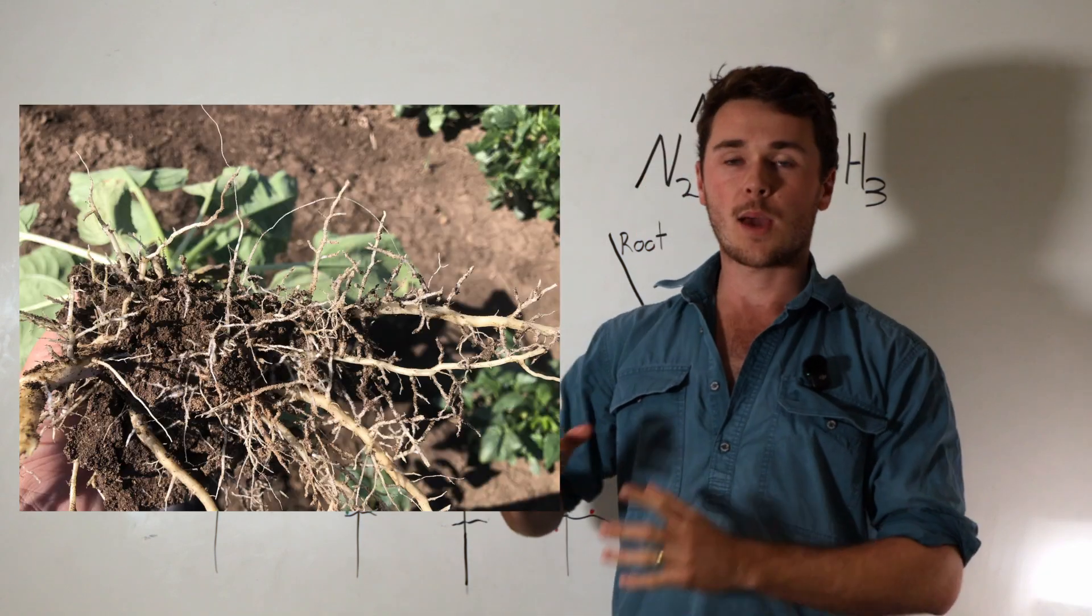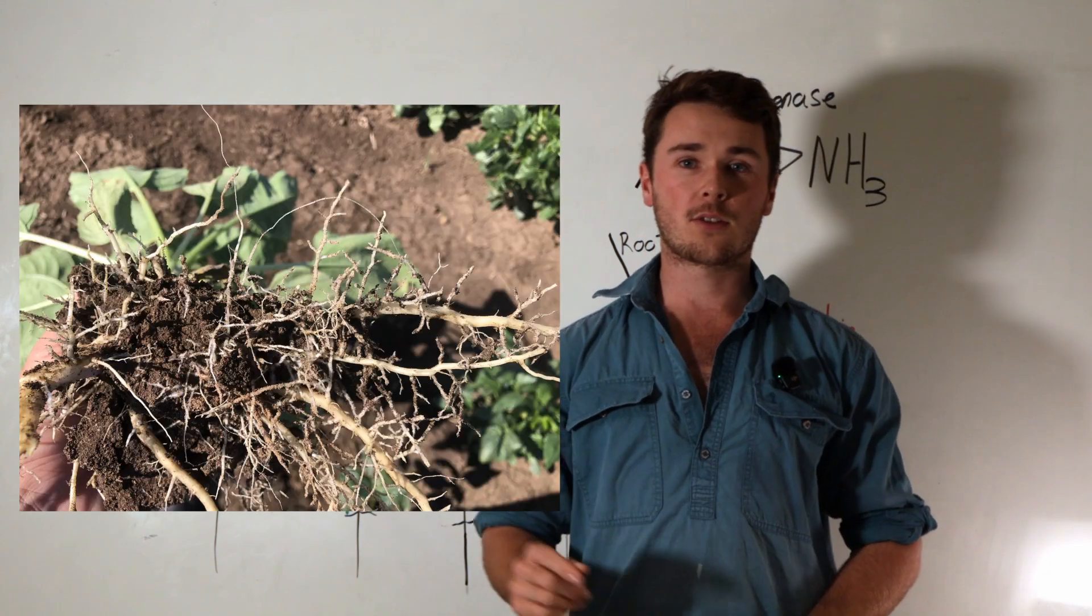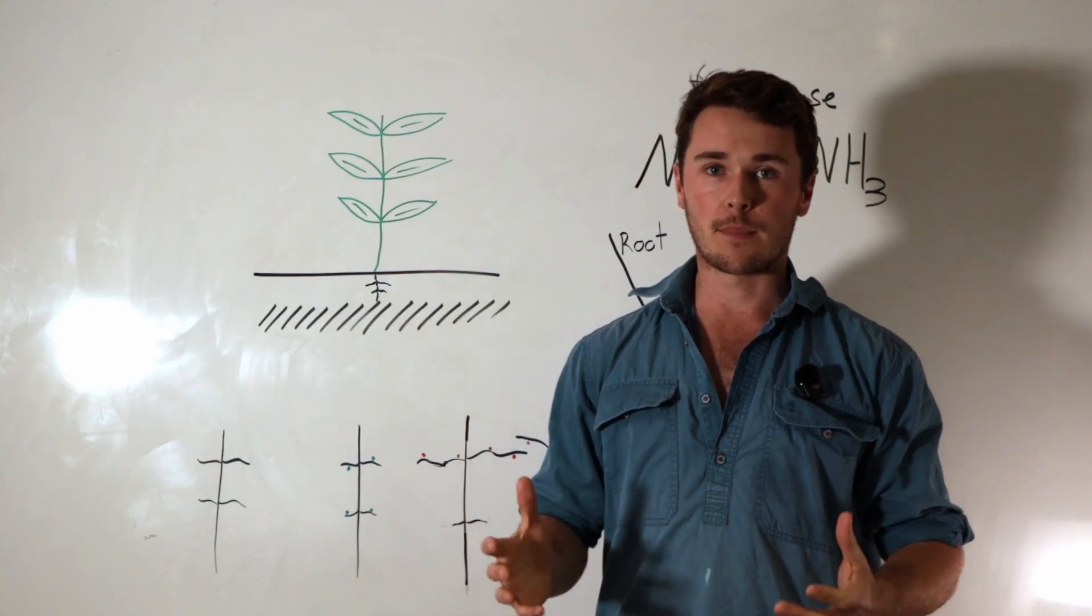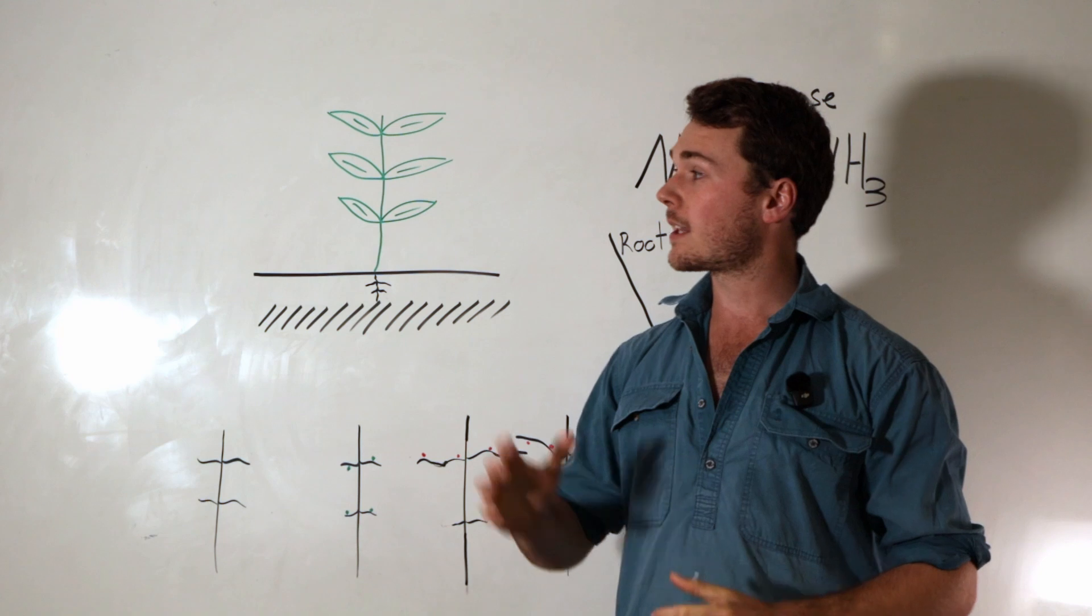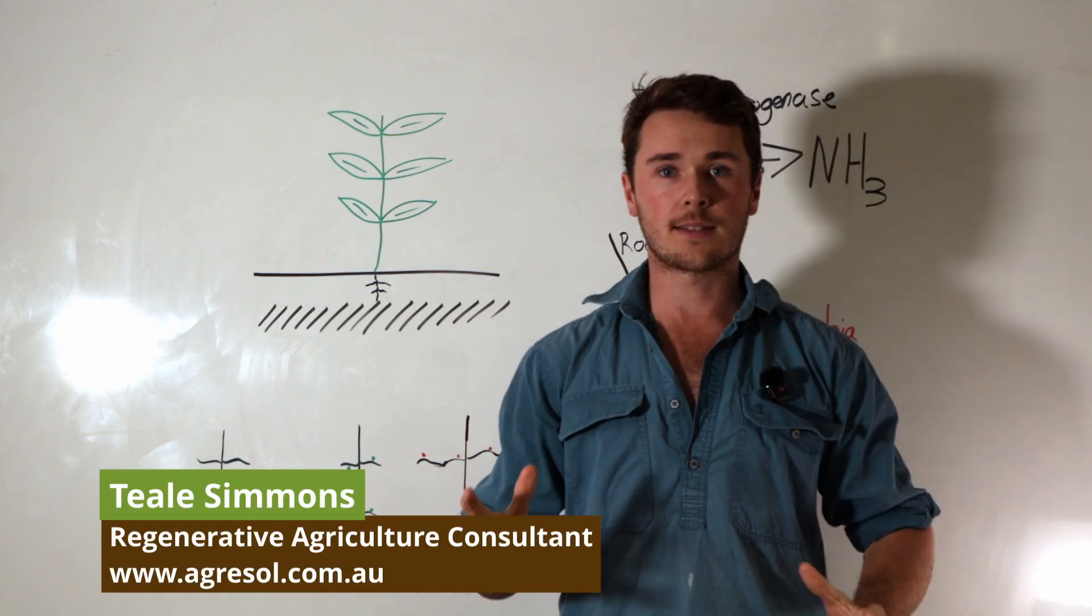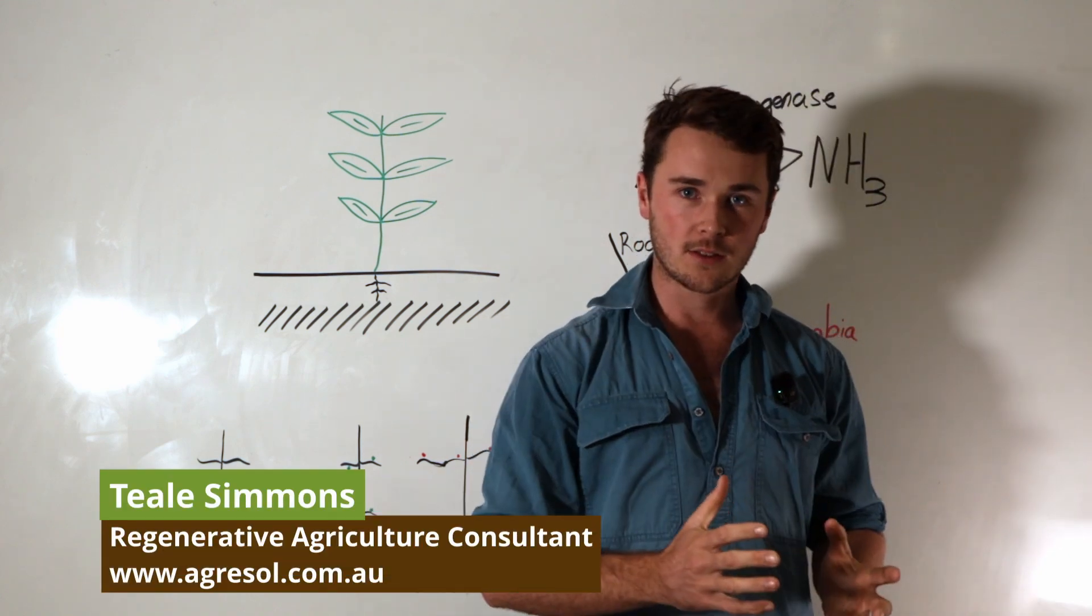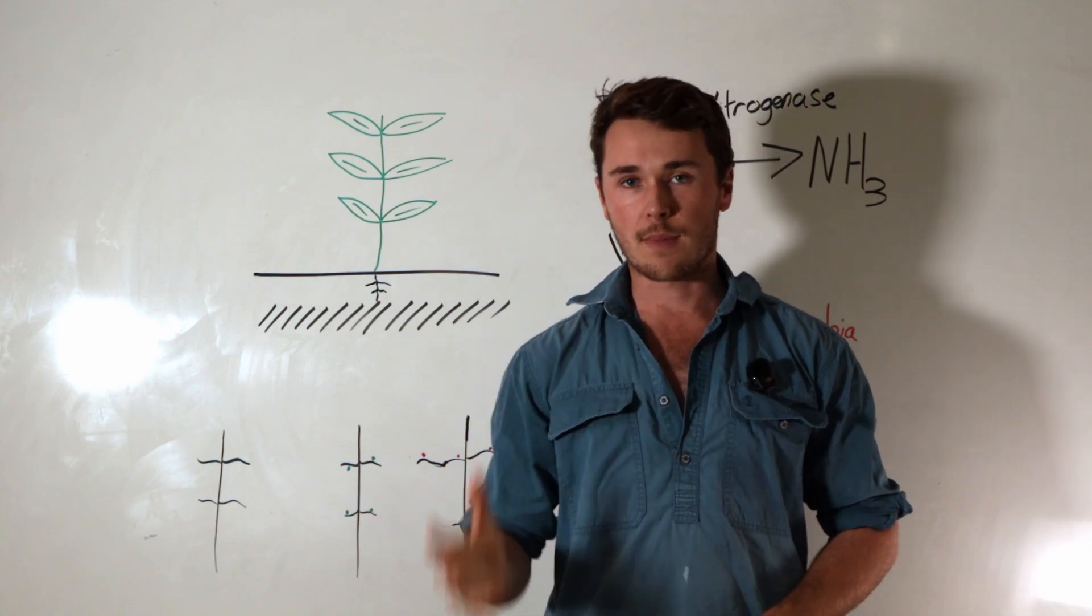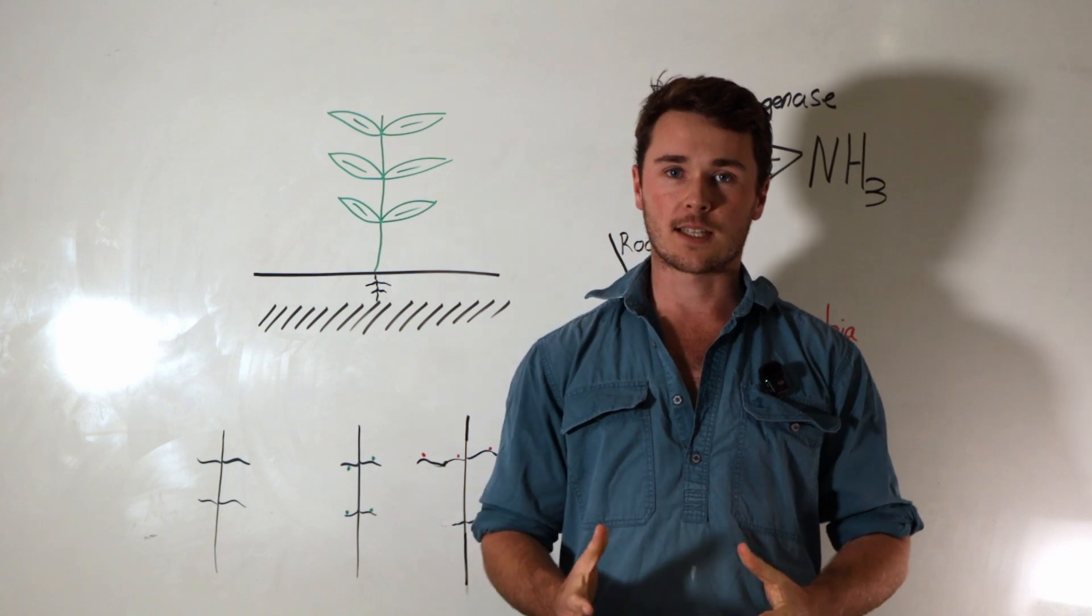If your legumes are looking like this with no nodules, it means they aren't fixing any nitrogen, which defeats the whole point of planting legumes for free nitrogen fertilizer. So I thought I'd put together this video to explain everything you need to know about nitrogen fixation in legumes and the minerals and soil components needed to maximize nitrogen fixation.